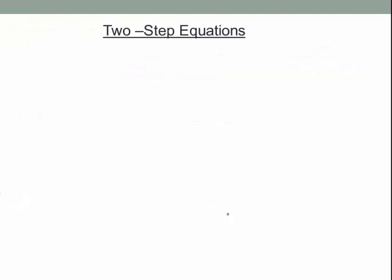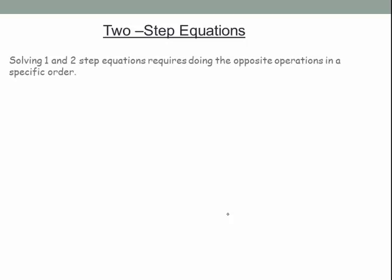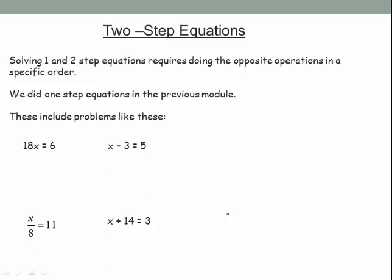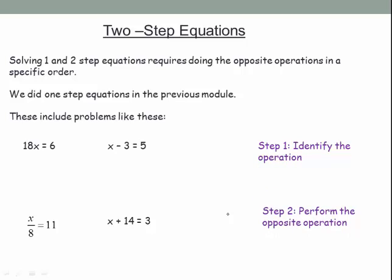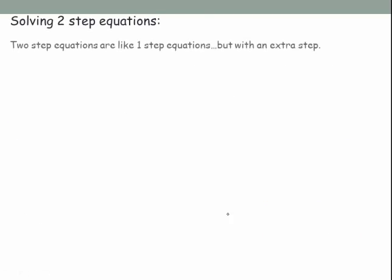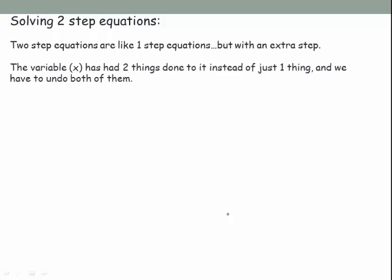Next we have two-step equations. These work the same way — we do opposite operations in a specific order — but the variable has had two things done to it instead of one, so we undo both. The first step is to identify the operations; the second step is to perform the opposite operations in reverse order.